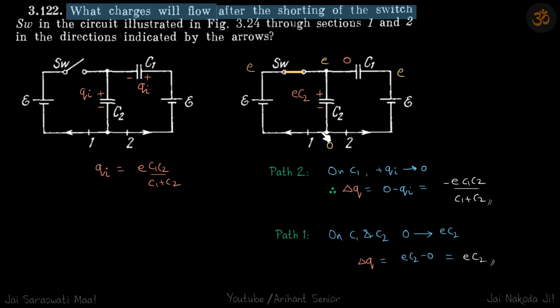On path one, initially it's an open circuit so there is no charge. Finally, if you keep going on path one, all the charges are on this capacitor and this capacitor. From zero it goes to ec2 plus zero, from zero to ec2. So the charge flow is ec2 minus zero, which is ec2, and that's our answer.